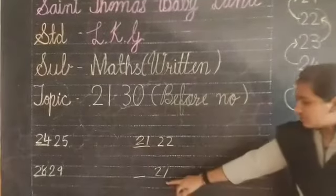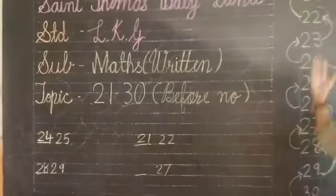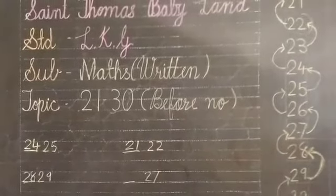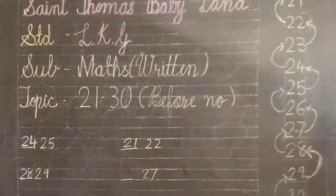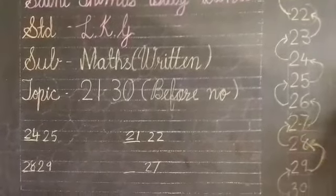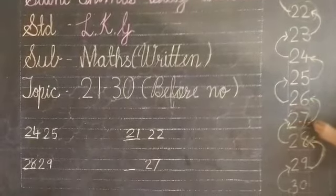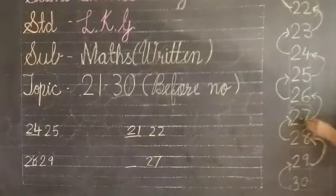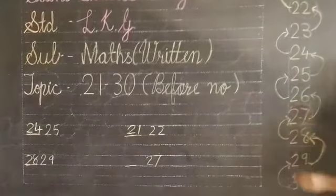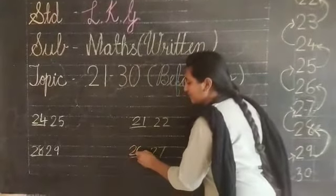Then which number is this? 27. 27. And where is 27? Find out children. Where is 27? Yes. Here is 27. And what is before? 27 before? 27 before is 26. So our answer is 26.